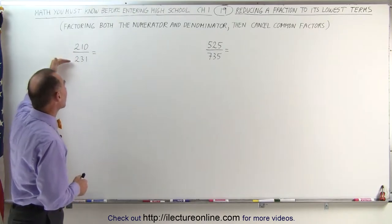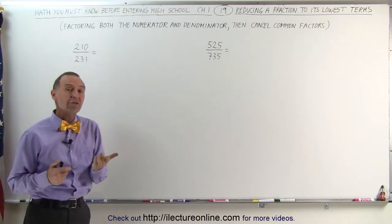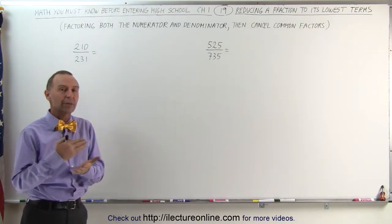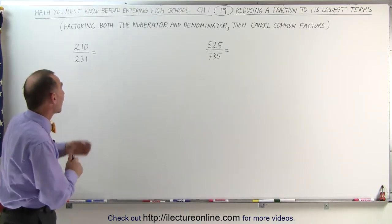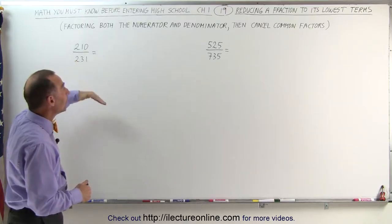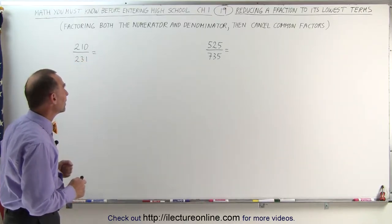You take the numerator and the denominator separately and factor each of them into a product of their prime numbers. You factor them so you can write them as a product of their prime factors, and then you reduce any common factors in the numerator and the denominator.